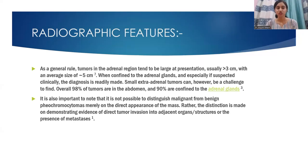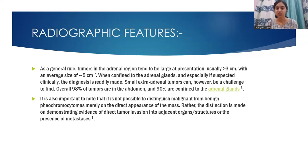As a general rule, tumors in the adrenal region tend to be large at presentation, usually more than 3 cm, with an average size of approximately 5 cm. When confined to the adrenal glands and especially suspected clinically, the diagnosis is readily made. Small extra-adrenal tumors can, however, be a challenge to find. 98% of tumors are in the abdomen and 90% are confined to the adrenal glands. It is important to note that it is not possible to distinguish malignant from benign Pheochromocytomas merely on the direct appearance of the mass. Rather, the distinction is made by demonstrating evidence of direct tumor invasion into adjacent organs or structures, or the presence of metastasis.